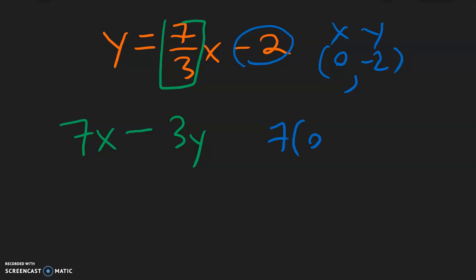So 7x, which is 0, minus 3y, which is negative 2, and see what this is equal to. 7 times 0 is 0, negative 3 times negative 2 is positive 6, so 0 plus 6 is 6, and that is the equation in standard form.